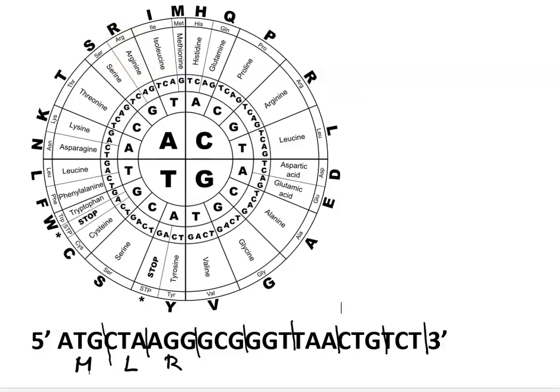We've got G in the first position, C in the second, G in the third position, which gives an alanine residue.